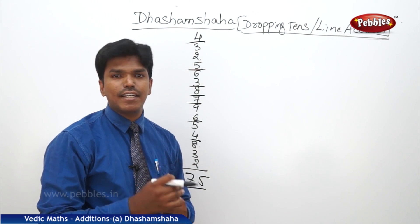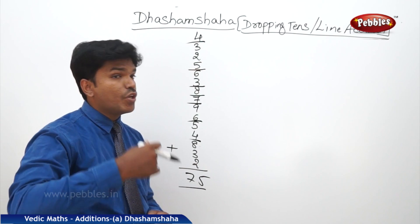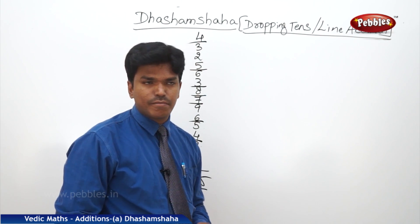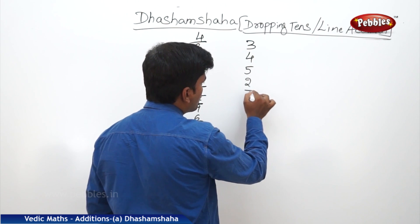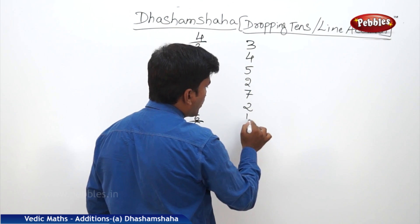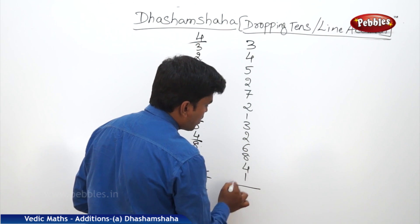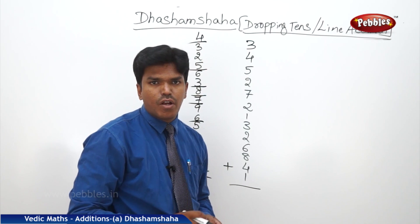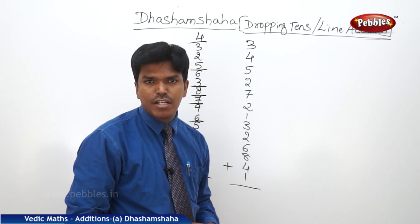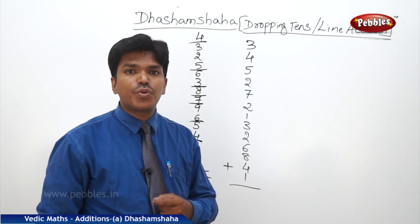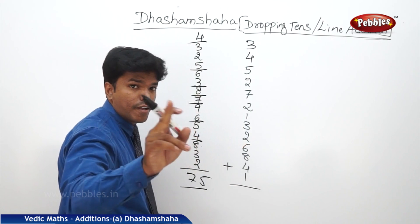That's how easy it is. I will give you one more example. Let us take: 3, 4, 5, 2, 7, 2, 1, 3, 2, 6, 8, 4, 1. Now I want to add these numbers. In general, you will take a lot of time. But by using our method, we are going to do it within less time. Now let us start from the bottom term.